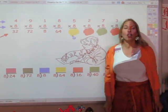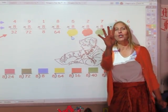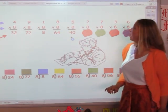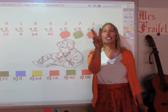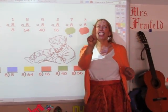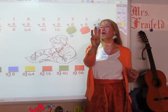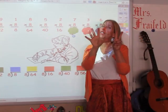I'm going to sing the eight song for five fingers. 8, 16, 24, 32, 40. 40 is my answer. I'm singing the eight song for six fingers. 8, 16, and 16 is my answer. I'm singing the eight song for seven fingers. 8, 16, 24, 32, 40, 48, 56.